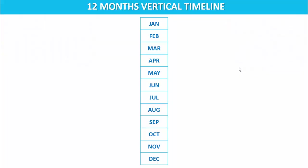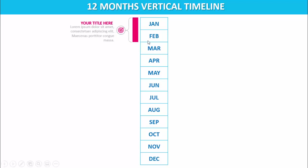In today's tutorial, I'm going to show you how to make a 12-month vertical timeline infographic slide in PowerPoint. As you can see here, I have added vertically 12 months starting from January to December. When I click, it will show you the first task which is for January to February, with a brace added along with an icon, where you can add your title and detail text.